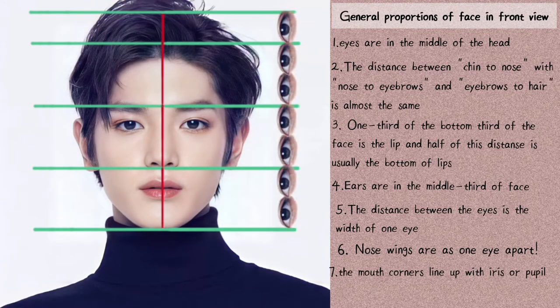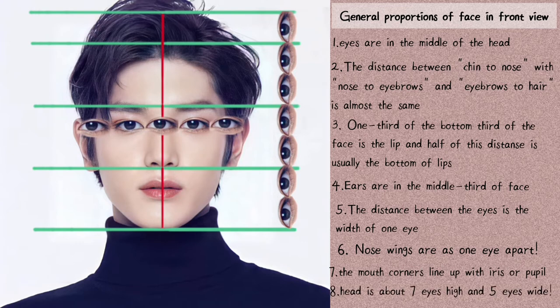If we take one eye as the unit of measurement, the head is about seven eyes high, meaning every third is about two eyes. The head is also about five eyes wide if we include the ears. Using the eye as a measuring unit is very helpful and we'll use it a lot, so it's better to learn it now.